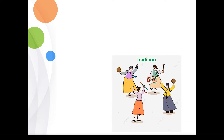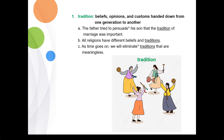The first word is 'tradition.' Tradition means beliefs, opinions, and customs handed down from one generation to another. Example one: the father tried to persuade his son that the tradition of marriage was important. Example two: all religions have different beliefs and traditions. Example three: as time goes on, we will eliminate traditions that are meaningless.